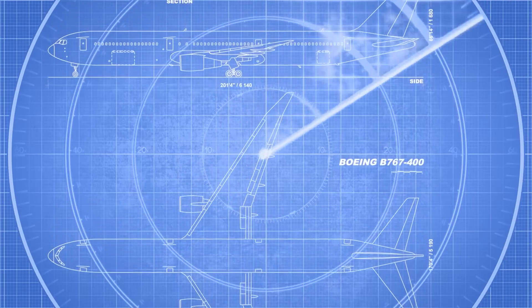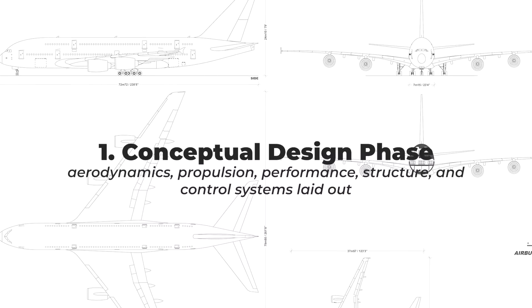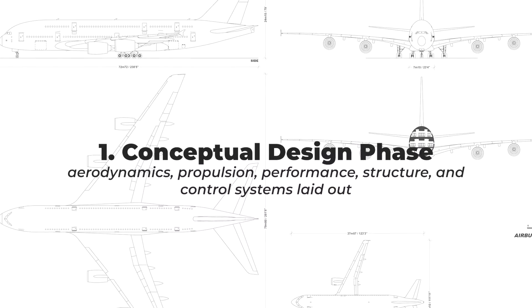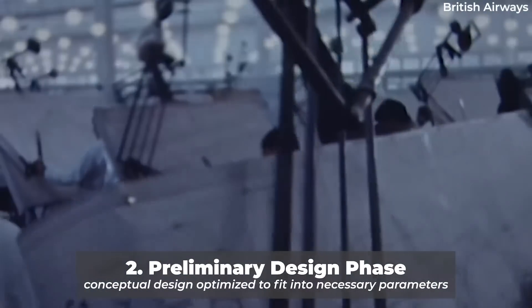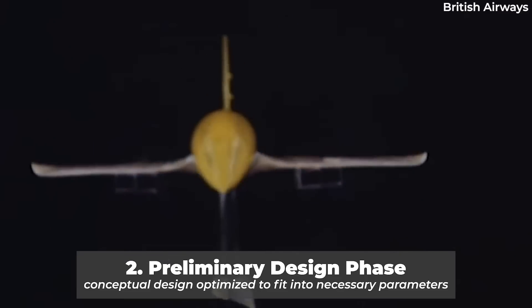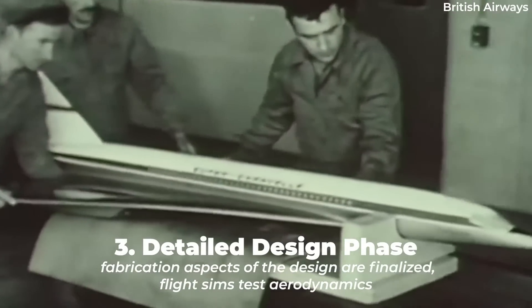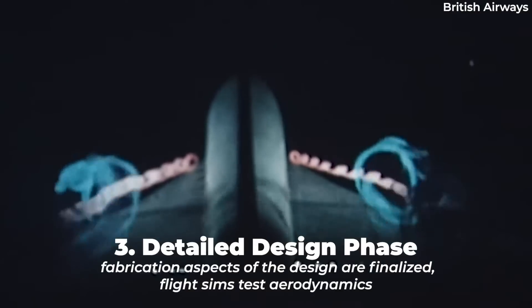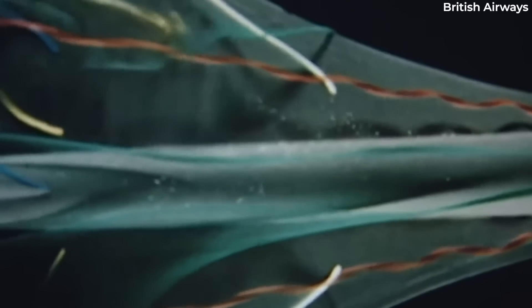There are three main design phases: conceptual, preliminary, and detailed. In the first phase, the conceptual sketch of the aircraft is laid out, including aerodynamics, propulsion, performance, structure, and control systems. In the preliminary design phase, the conceptual design is optimized to fit the necessary parameters set for the aircraft, and computational and wind tunnel analysis of structural and control components is performed. In the detailed design phase, the fabrication aspects of the design are finalized, and flight simulators are used to test the dynamics of flight. It is noteworthy that the official launch of the aircraft may occur sometime during the design phase.